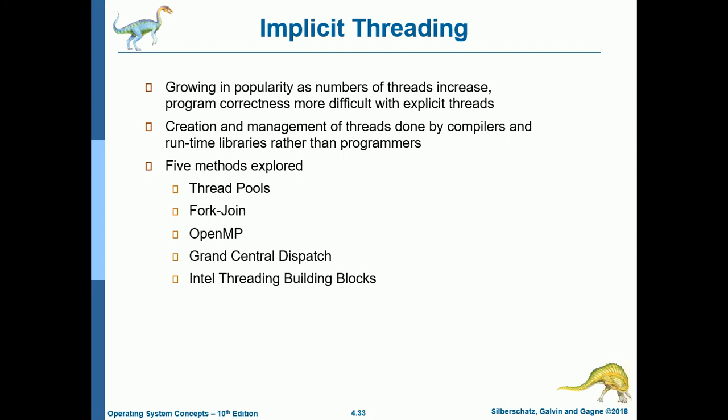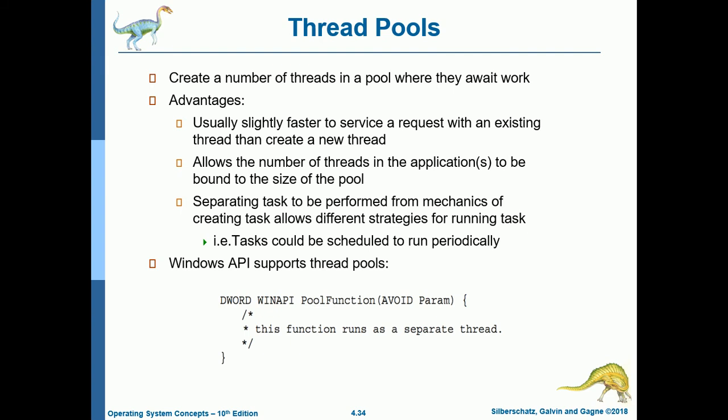Implicit threading is growing in popularity as the number of threads increases, since program correctness is more difficult with explicit threads, and creation and management of threads is done by compilers and runtime libraries rather than programmers. Five methods are explored: thread pools, fork-join, OpenMP, Grand Central Dispatch, and Intel Threading Building Blocks.